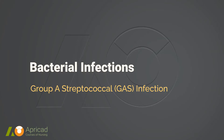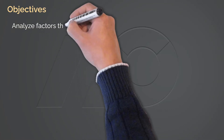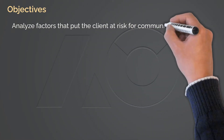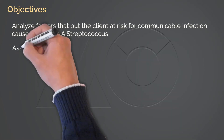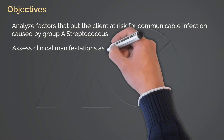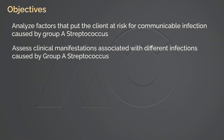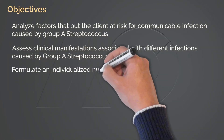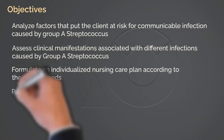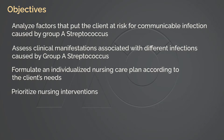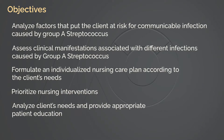Here is the list of the objectives for this lecture: analyze factors that put the client at risk for communicable infection caused by Group A Streptococcus; assess clinical manifestations associated with different infections caused by Group A Streptococcus; formulate an individualized nursing care plan according to the client's needs; prioritize nursing interventions; and analyze client's needs and provide appropriate patient education.